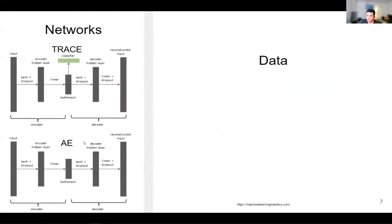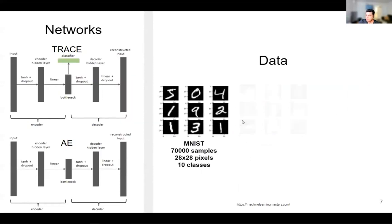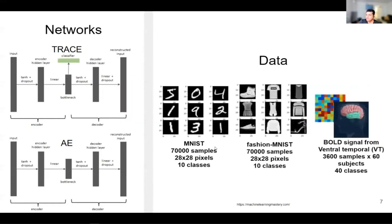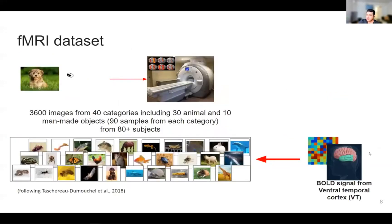We have two networks — TRACE and autoencoder — and three datasets: MNIST, Fashion MNIST, which are commonly used in benchmarking, and the BOLD signal from the ventral temporal cortex collected by another group where subjects were looking at 40 different categories of objects while BOLD signals were collected.